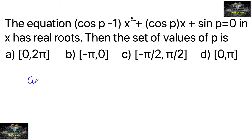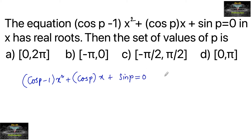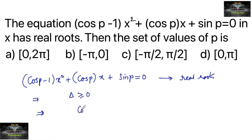The equation (cos p - 1)x² + (cos p)x + sin p = 0 has real roots. The set of values of p: since this equation has real roots, its discriminant must be greater than or equal to 0. That is, b² - 4ac = cos²p - 4(cos p - 1)(sin p) ≥ 0.